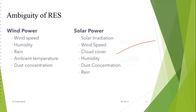Factors affecting wind power generation: wind velocity changes continuously and affects power generation. Humidity in the air reduces wind velocity. During rainy season, cyclones or hurricanes force turbine shutdown for emergency safety. Ambient temperature and dust concentration in the wind are also factors that reduce wind power generation efficiency.